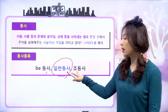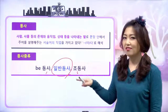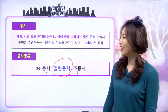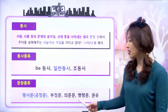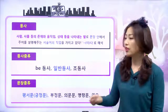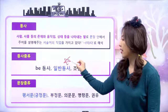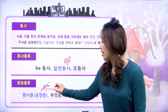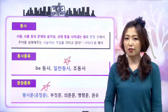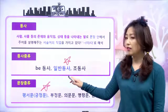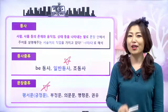일반 동사 여기 파란 글씨로 이렇게 표시되어 있는 거, 뭔지 알죠? 오늘. 동사가 들어간 문장의 종류들에는 이런 것들이 있는데, 그중에 오늘 이 표에서 보는 것처럼 일반 동사의 평서문, 즉 긍정문에 대해서 알아볼 거예요. 일반 동사가 들어간 문장 중에 평서문에 대해서 알아볼 거예요.